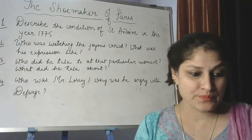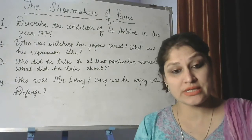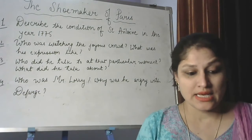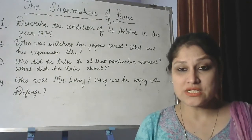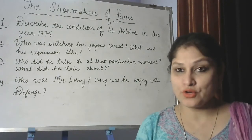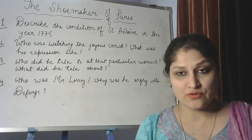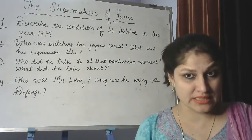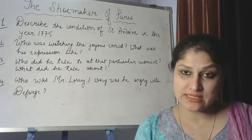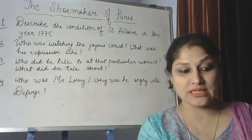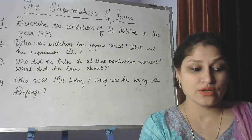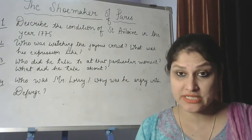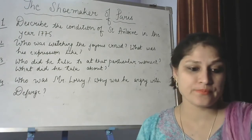The first thing I want you to do is make a small notebook for your Class 8 — a small one — and write 'English Literature' on it. On the first page write today's date and the name of the chapter, 'The Shoemaker of Paris.' Under that, write new words. There are five words given after the chapter — copy these five words with their meanings. Under that, write question and answers, then copy the questions given after the chapter, and later the reference to context as well. Make sure you make a proper notebook, cover it, and keep your work neat and clean.